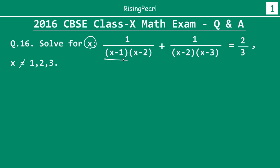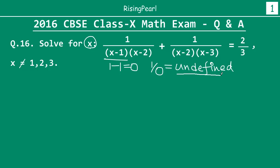the factor (x−1) will become 1 minus 1, or 0. So the entire fraction will become 1 divided by 0, which is undefined. For the same reason, if you put x equals 2, both denominators become 0, making the entire equation undefined. Similarly, if x equals 3, that factor becomes 0 and the equation is again undefined. So x cannot have any of these values.